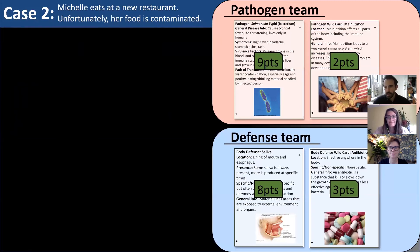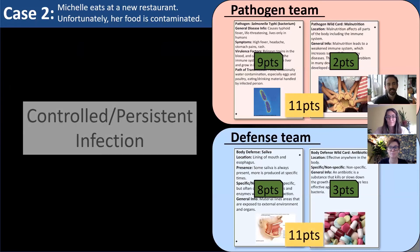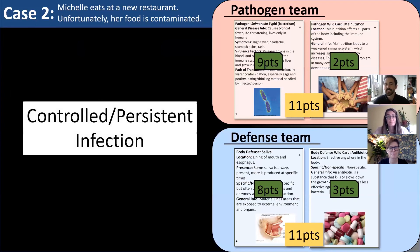Whoever has the most points at the end of a case wins. In this particular example, both teams tie with 11 points each, resulting in a controlled or persistent infection — one that doesn't get worse but doesn't get better without further interventions. We have many different cases, and most don't result in a tie, but it does happen occasionally. We want students to experience this because it happens in the real world — sometimes patients need more interventions before they can be healed.